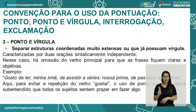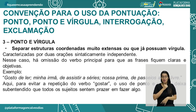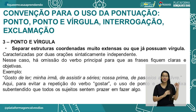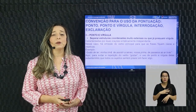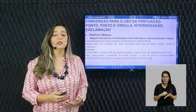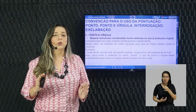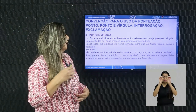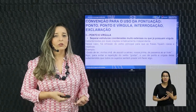O ponto e vírgula também serve para separar estruturas coordenadas muito extensas ou que já possuam vírgula, caracterizadas por duas orações sintaticamente independentes, com omissão do verbo principal. Exemplo: 'Gosto de ler; minha irmã de assistir a séries; nossa prima de passeio ao ar livre.' Para evitar a repetição do verbo gostar, o uso do ponto e vírgula deixa subentendido que todos os sujeitos sentem prazer em fazer algo.